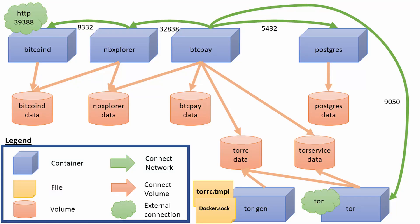Now that I got the warnings out of the way, we can see that our BTC Pay server will communicate with the rest of the world using a Tor server. BTC Pay server requires us to use some web server to provide it with secure communication. We can either generate a web server with SSL using services like NGINX or Apache and Let's Encrypt, or we can choose to use Tor.